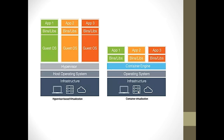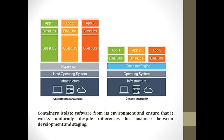Now if you look at the container facility shown on the right side image — we need an infrastructure, and over that infrastructure lies an operating system. On that operating system we have a container engine installed directly, which is responsible for running different applications bounded within their own libraries. This is the basic difference between virtualization and container technology. Containers isolate software from the environment and ensure it works uniformly despite differences between instances.